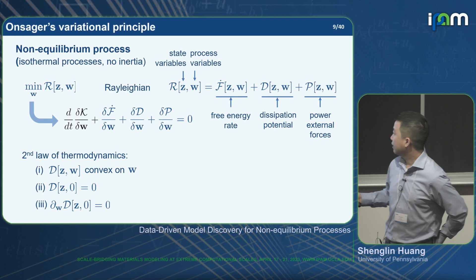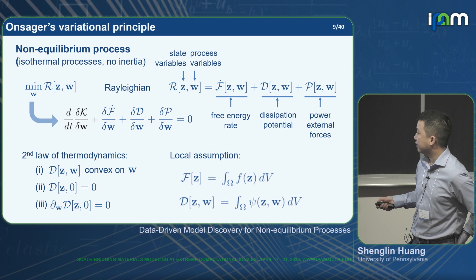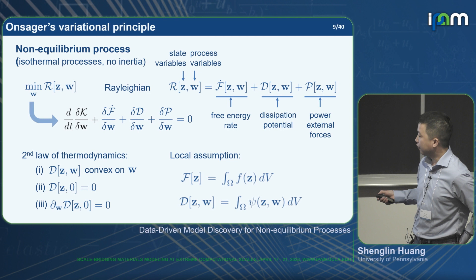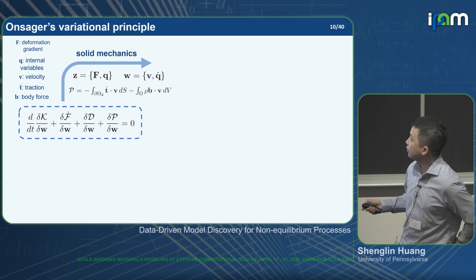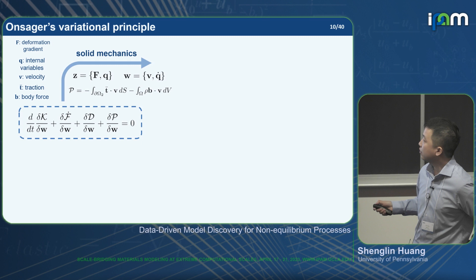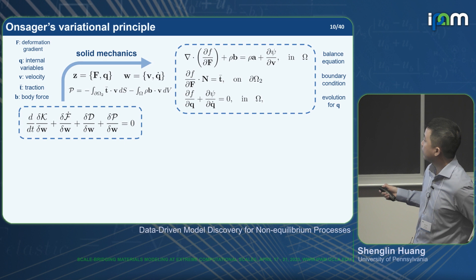We also want to introduce a local assumption such that the global free energy and dissipation potential can be written as volume integrals of their local densities. For solid mechanics, using deformation gradient and internal variables as state variables and velocity and time rate of internal variables as process variables, we obtain governing equations including the balance law, traction boundary condition, and evolution of the internal variable q.